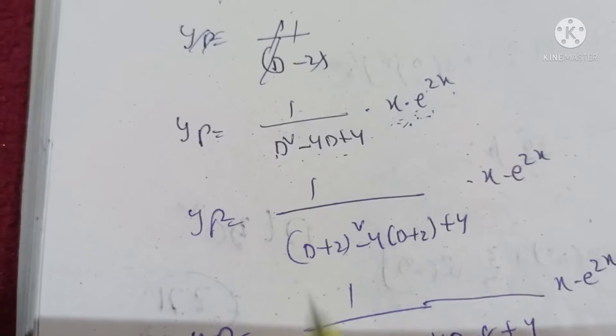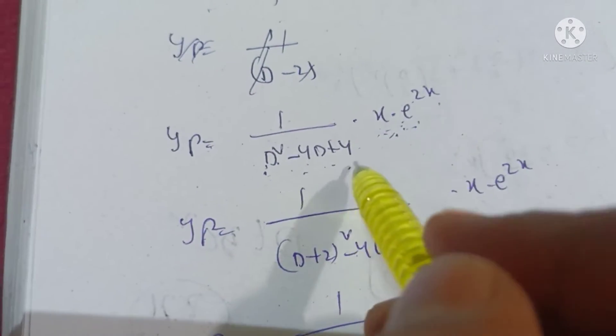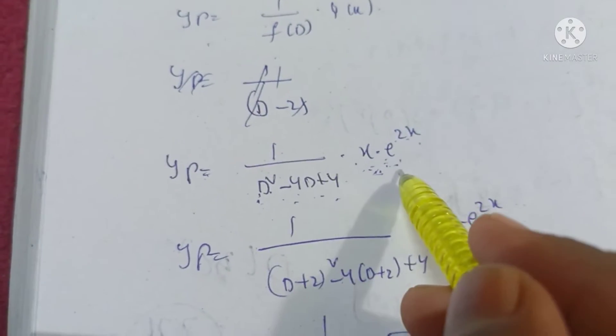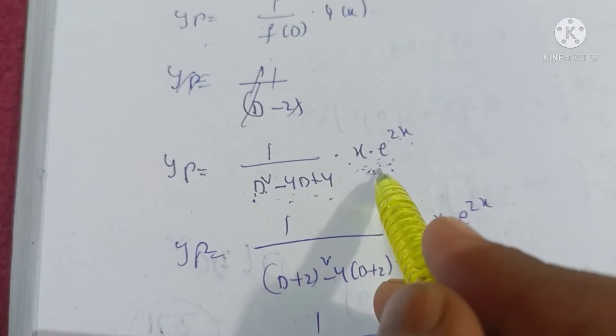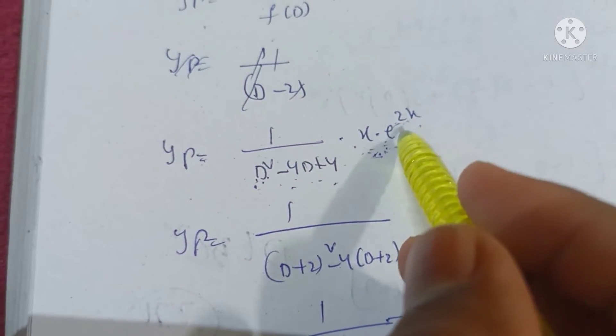Particular solution. y_p is equal to 1 by f of d, d square minus 4d plus 4 into x e power 2x. The fourth method, therefore substitute d plus 2 in e power ax formula. a value is 2.